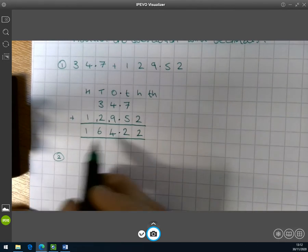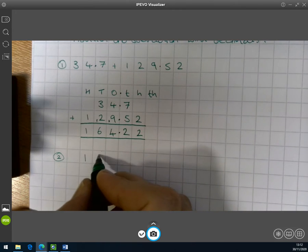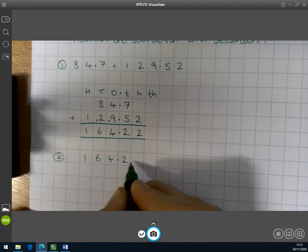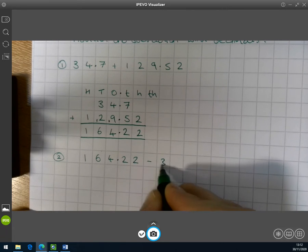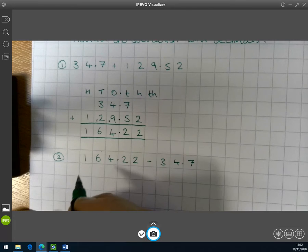So question number two. Let's do this in reverse. Then we know we're getting to the right answer. So let's do 164.22 minus 34.7. And we know we should be getting back to 129.52.